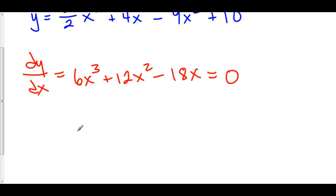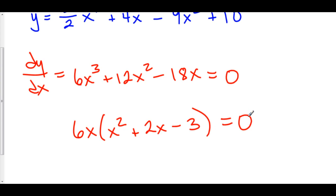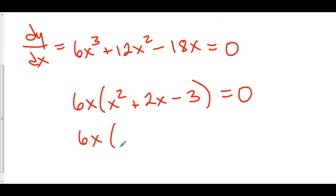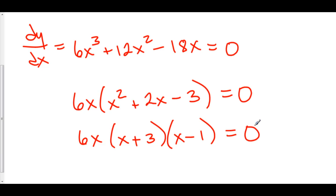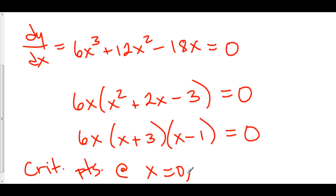We can factor out a 6x, so we have 6x times x squared plus 2x minus 3, and this is all equal to zero. We can factor x squared plus 2x minus 3. This is 6x times (x plus 3) times (x minus 1), equal to zero. So we have critical points at x equals zero, x equals negative 3, and at x equals 1.